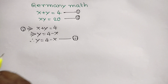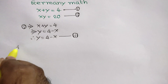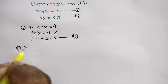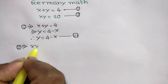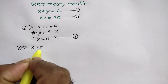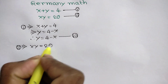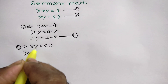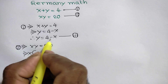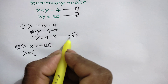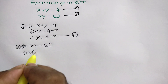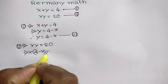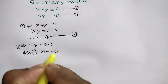Now, from equation 2, we have xy is equal to 20. Substituting y from equation 3, x times (4 minus x) is equal to 20, so we can write x(4 minus x) is equal to 20.